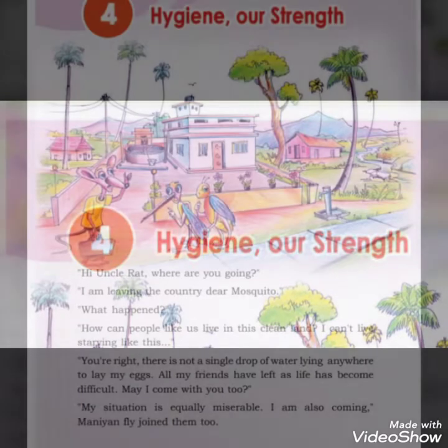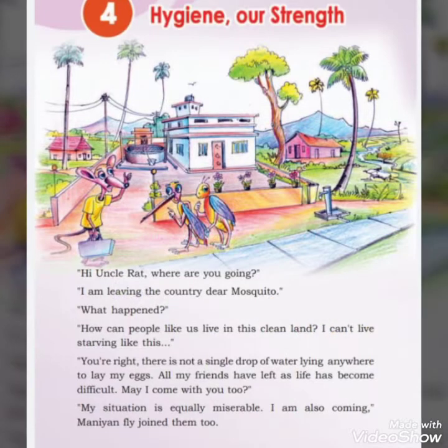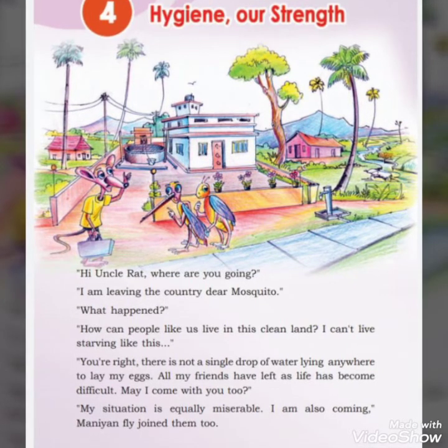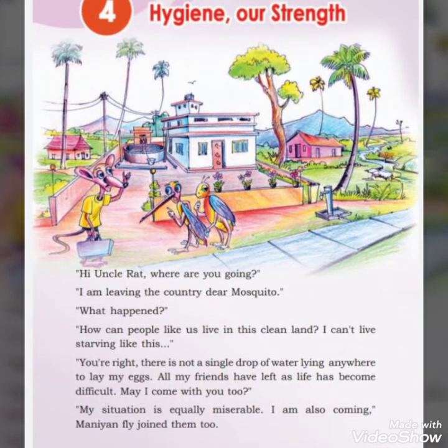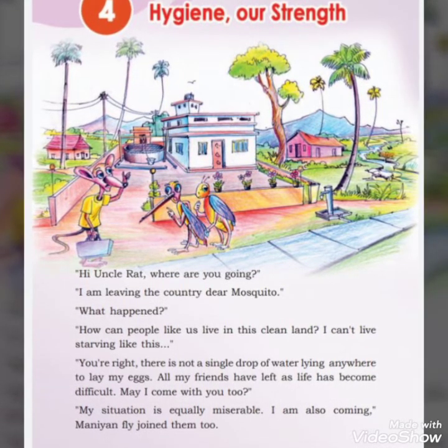There are three friends in the picture: Uncle Rat, Mosquito, and Fly. They are talking something.